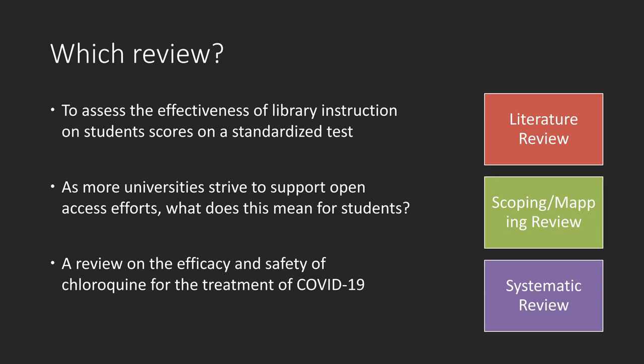This is the last set of examples. To assess the effectiveness of library instruction on students' scores on a standard test — this should be a systematic review. As more universities strive to support open access efforts, what does this mean for students? This question is very broad, so it could be a literature review. A review on the efficiency and safety of chloroquine for treatment of COVID-19 — this should be a systematic review.